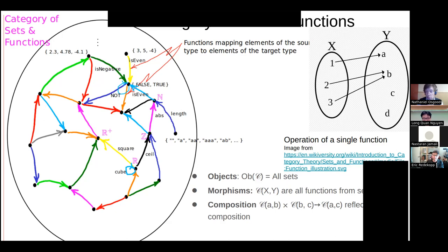Similarly, adding 2+3+4: whether we do (2+3)+4 = 5+4 = 9, or 2+(3+4) = 2+7 = 9, the result is the same. Associativity holds for a lot of cases. It says that the result of the composition is the same regardless of grouping — it doesn't matter where the parentheses go. There's no wondering which to do first. It's unambiguous either way.